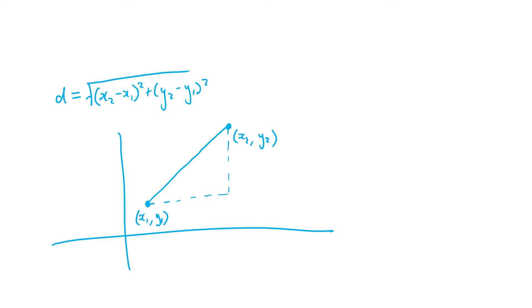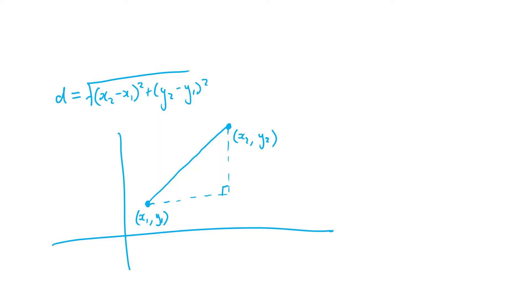This looks a lot like a right-angled triangle, and you'll find that a lot of coordinate geometry questions utilize this right-angled triangle. What do we know about right-angled triangles? Well, we know Pythagoras' theorem: c squared equals a squared plus b squared. We're going to use this to find the distance between our two points. We'll call the hypotenuse c, which is what we're looking for, and the other sides a and b. We can quite easily find the length of a, because a is going to be equal to x1 minus x2.